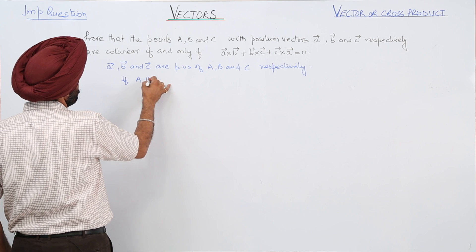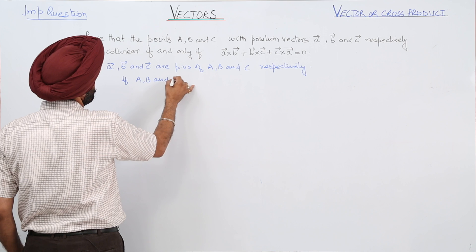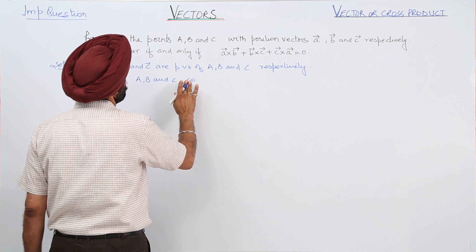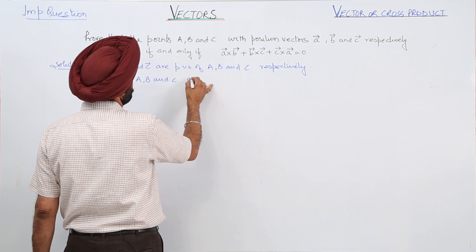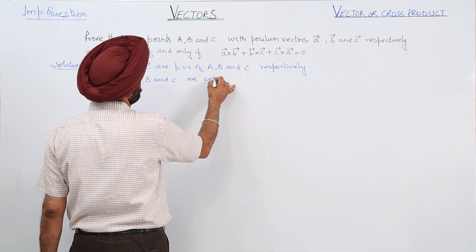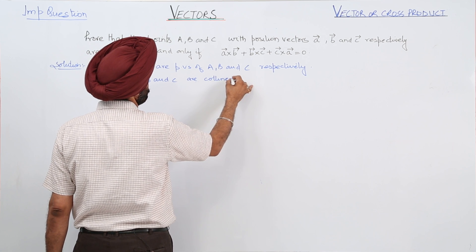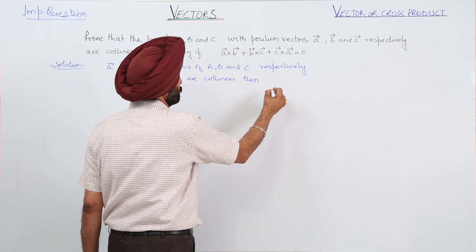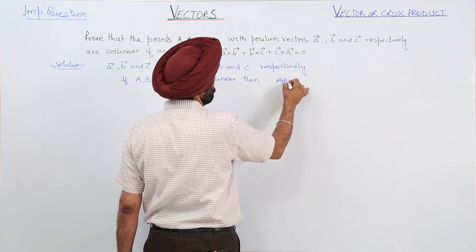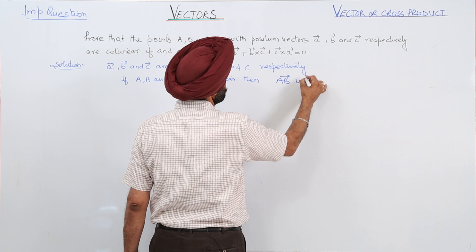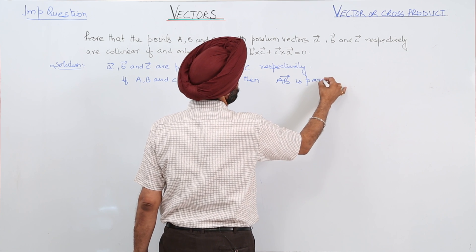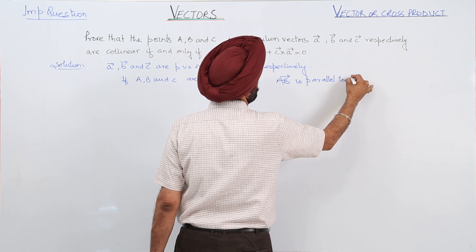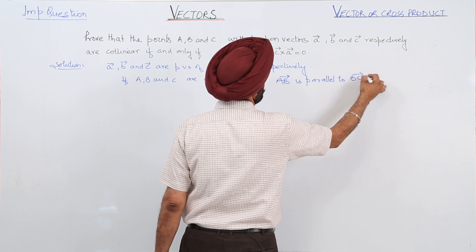If A, B and C are collinear, then vector AB is parallel to vector BC.